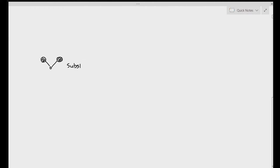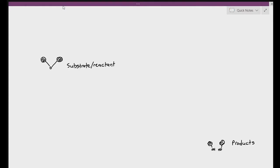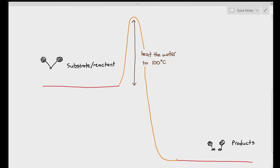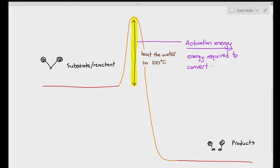If we draw out an energy level graph, remember that hydrolysis is an exothermic reaction — the substrate has a higher energy level and the products have a lower energy level. You don't need to memorize this for biology; it's more chemistry-level knowledge. The red lines represent their energy levels. To convert the substrate to a product, you had to heat the water to 100°C for an effective collision. That extra heat required is known as the activation energy — the energy required for a chemical reaction to take place, or to convert a substrate to a product.